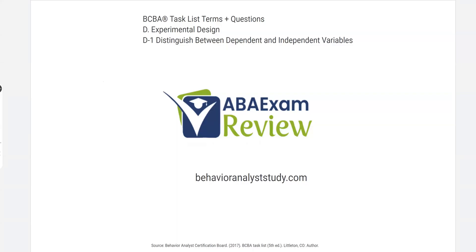Welcome back to ABA Exam Review and the continuation of our BCBA 5th Edition Task List series with D, Experimental Design. Today we're starting experimental design, probably the least favorite section for many people preparing to take this exam, just because we don't think about experimental design a lot in practice, but you've got to know the ins and outs. And we're going to start with a very important idea: dependent and independent variables.